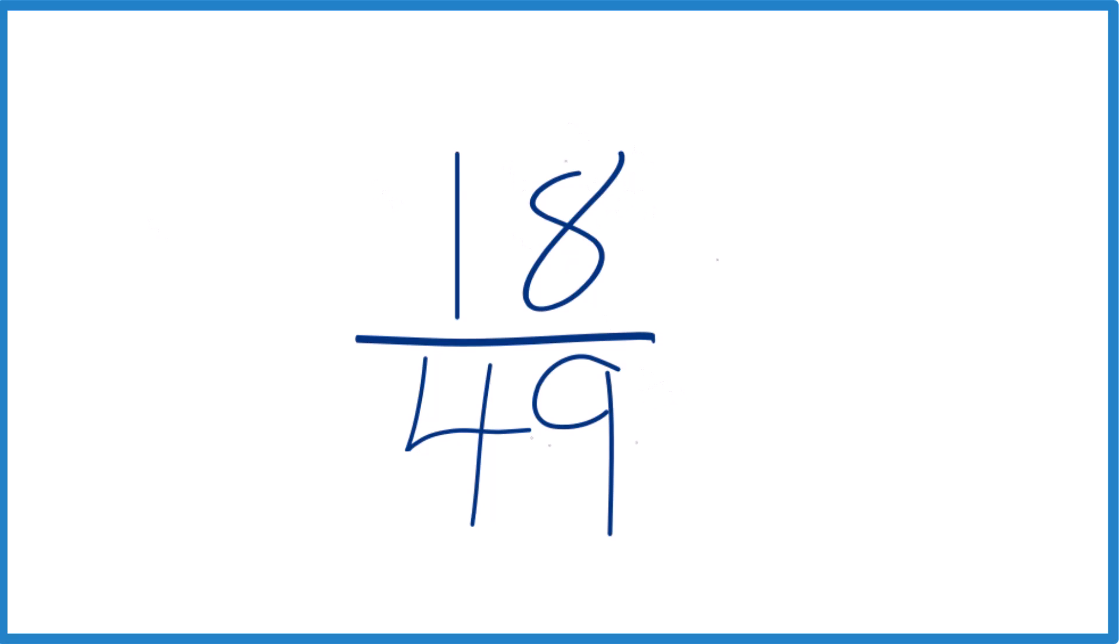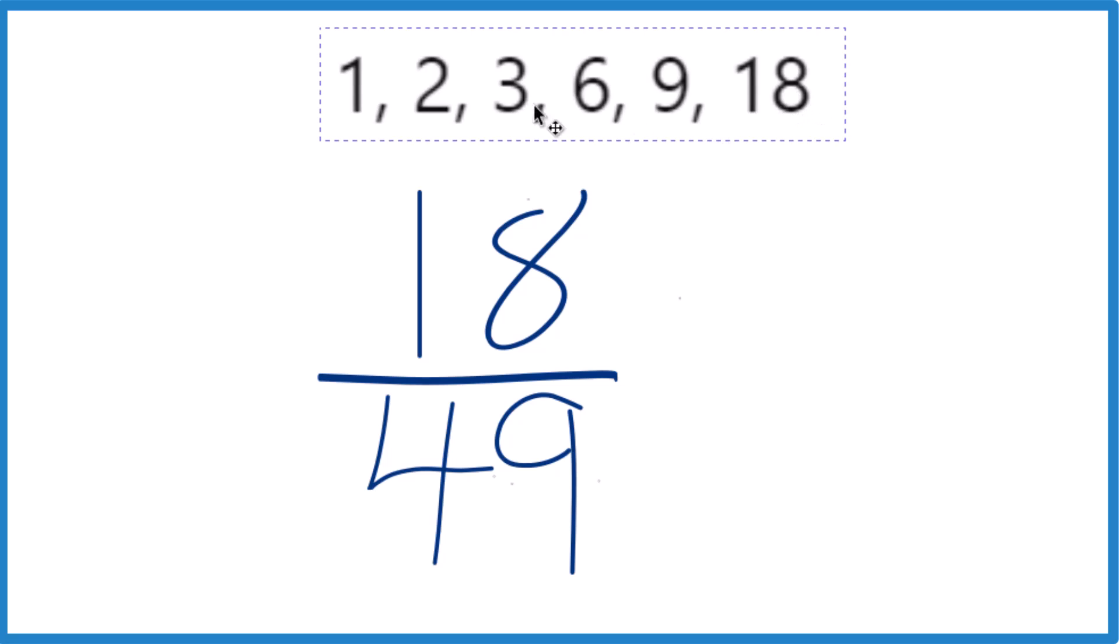So for 18, the factors are 1, 2, 3, 6, 9, 18. So 1 times 18, 2 times 9, 3 times 6, all that equals 18.